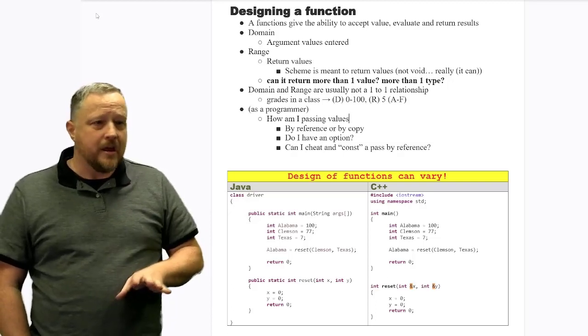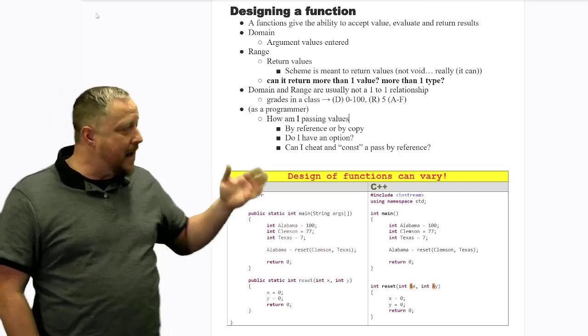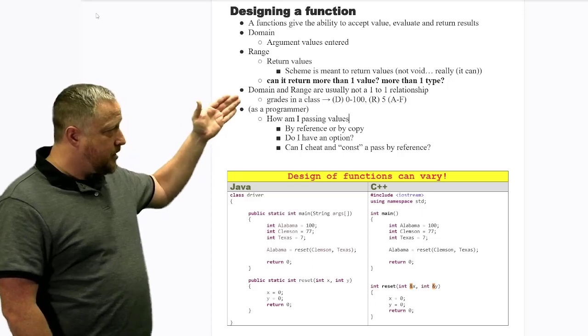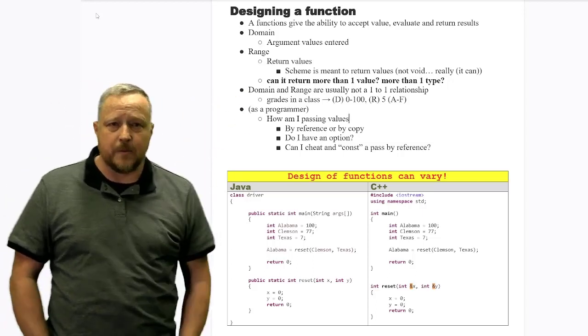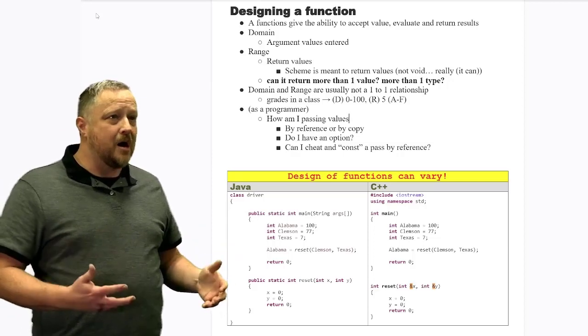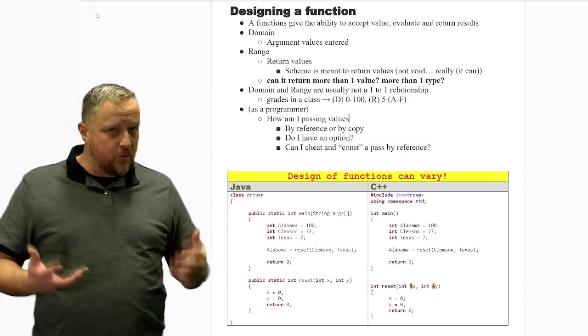What can we get away with? In Python, for example, I can return, going back to the domain and range, are usually not one-to-one relationship. In Python, I can return more than one value.